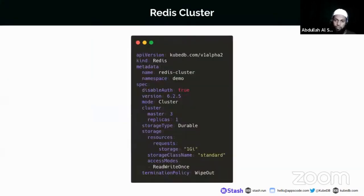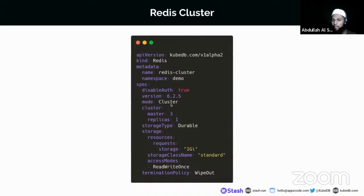Let's move on to the live demo. First I'll introduce you to some CRDs. One of the CRDs is the Redis cluster. In this Redis cluster CRD, the API version is kubedb.com and the kind is Redis. The mode is cluster, so we will have Redis in sharded mode. In cluster mode we have three masters and one replica — so there will be three shards, and in each shard there will be one master and one replica.